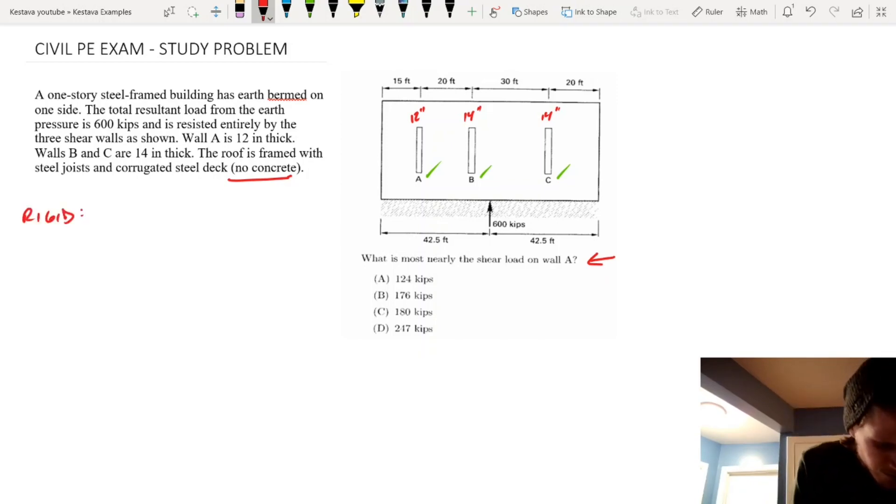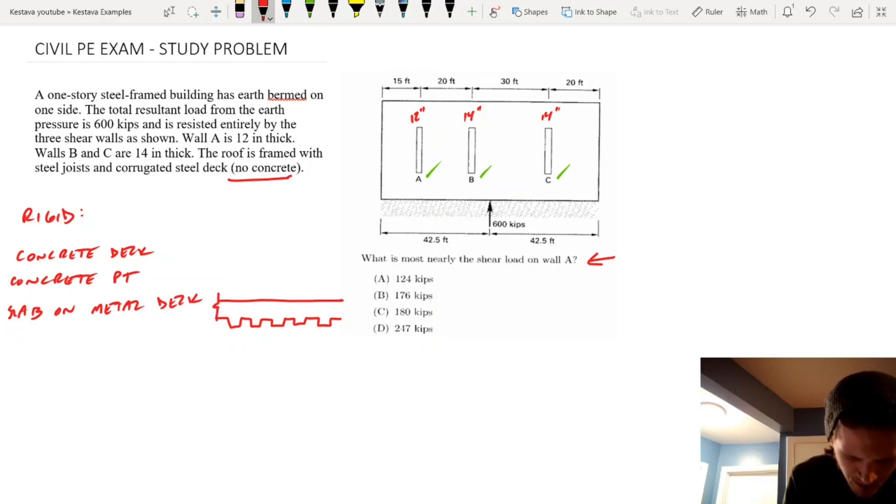So we have rigid is concrete deck, concrete PT decks, slab on metal deck, and that is, for those who don't know, I'll make a quick sketch of it. That's when you have corrugated decking, but you actually cast concrete on top of it. And that creates a rigid diaphragm. Sometimes that's where you kind of get into the weeds, whether it's rigid or semi-rigid, but we're not going to go there today.